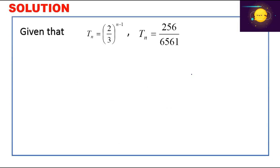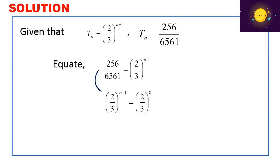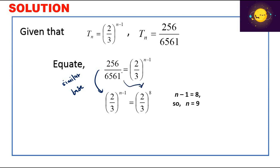Next, determine n where tn = 256/6561. We equate (2/3)^(n-1) = 256/6561, then find a common base: 256/6561 = (2/3)^8. Comparing exponents, n - 1 = 8, so n = 9. Therefore t9 = 256/6561.